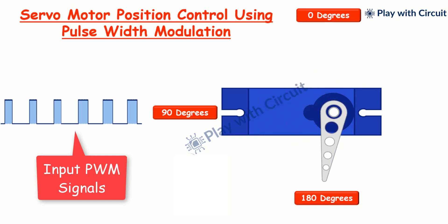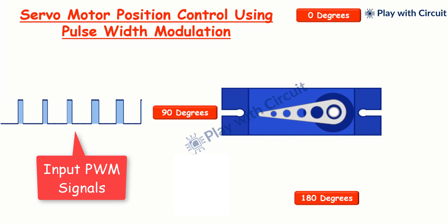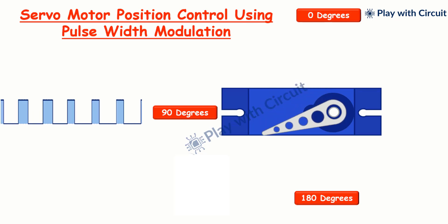When you send a PWM signal to a servo motor, its control circuit measures the duration when the signal is high, which determines the position of the servo motor.